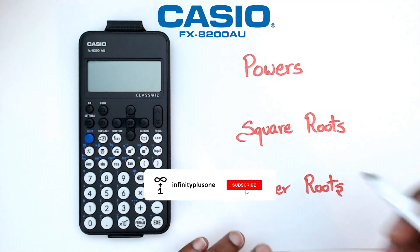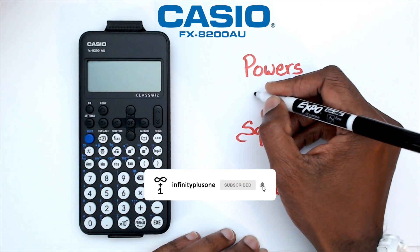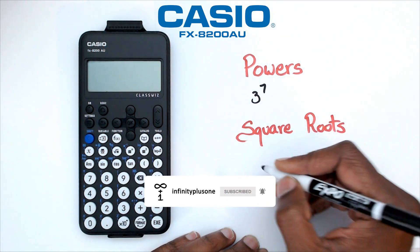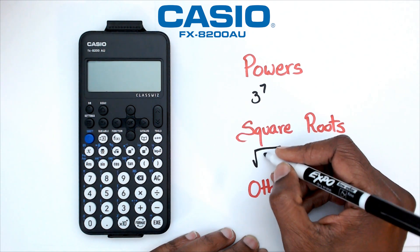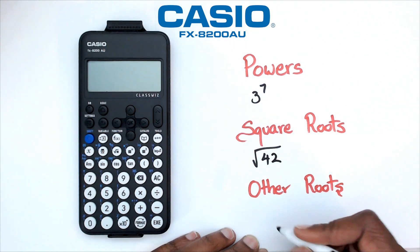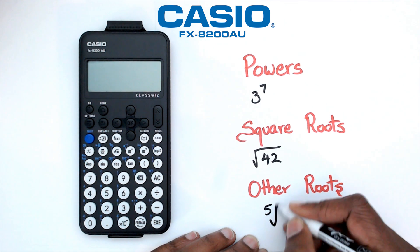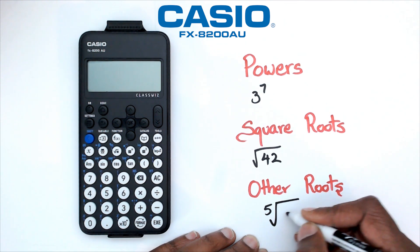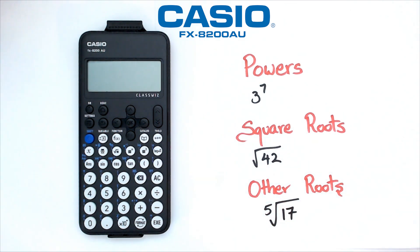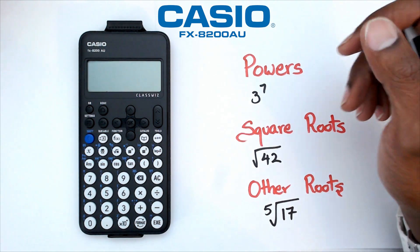So for this particular video, what we're going to be looking at is how to solve questions like this: 3 to the power of 7, square root of 42, and the fifth root of 17. So these are the three questions that we're going to be looking at for this particular video.